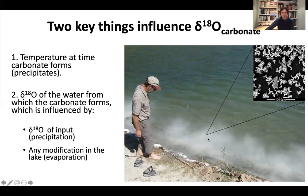This is calcium carbonate — CaCO3 — so it has oxygen in it. Whether that oxygen is oxygen-18 or oxygen-16, the ratio of oxygen-18 to oxygen-16 will vary depending on two key things: the temperature of the water from which it forms, and the oxygen isotope composition of the water from which it forms.